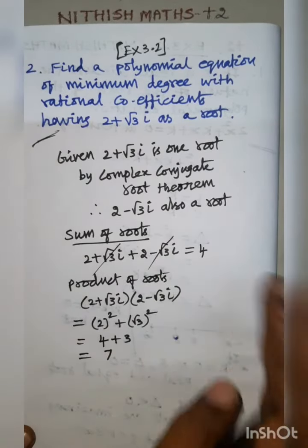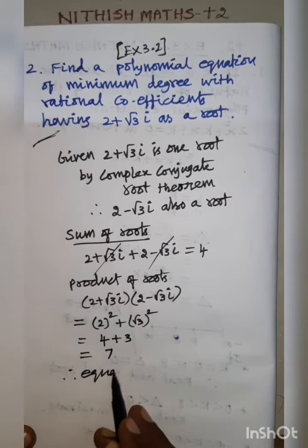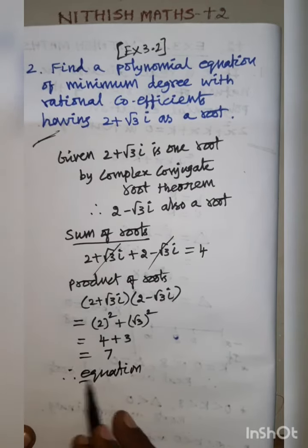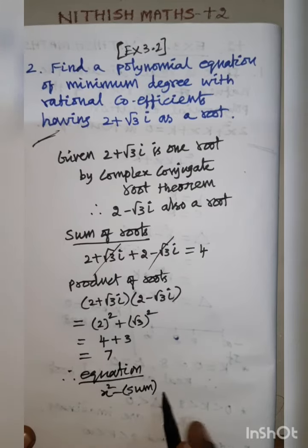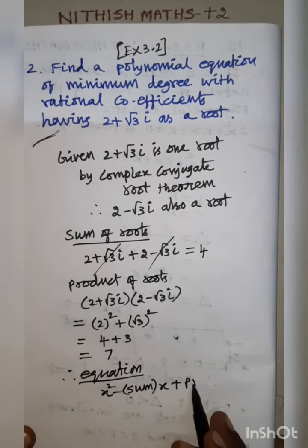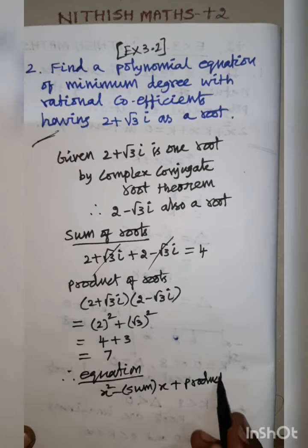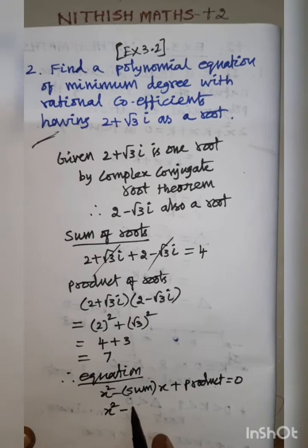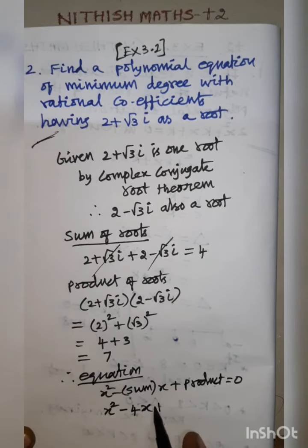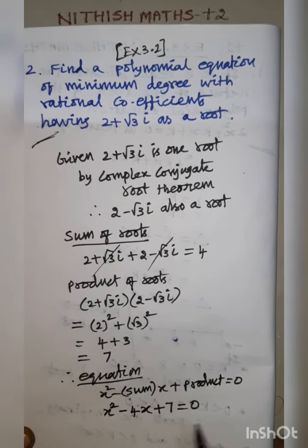Therefore, the equation: quadratic equation is x square minus sum of roots x plus product of roots equal to 0. x square minus 4x plus 7 equals 0. This is the required equation.